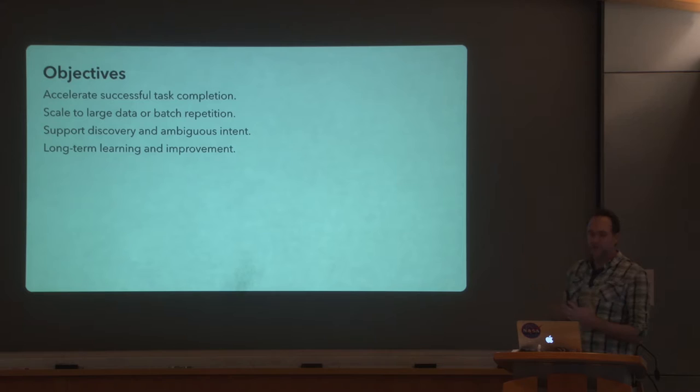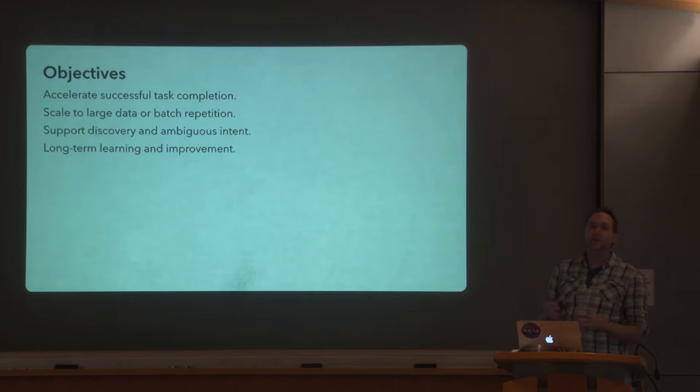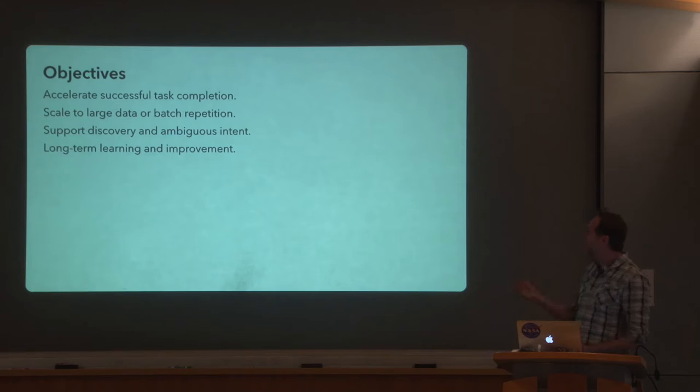Here are some of the objectives of the types of interfaces we'd like to build. We want to accelerate successful tasks. We also want to scale to large data or tasks that might require lots of repetition. We want to support discovery and support perhaps ambiguous user intents. If I come to a system with a vague notion of what I want to accomplish, does the system help me refine that? And similar to autocomplete, can the system get smarter over time and learn from usage?